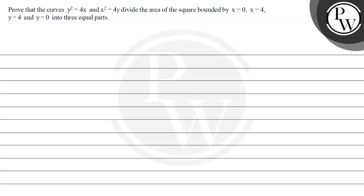Hello, let's read the question. Prove that the curves y squared equals 4x and x squared equals 4y divide the area of the square bounded by x equals 0, x equals 4, y equals 4, and y equals 0 into 3 equal parts.